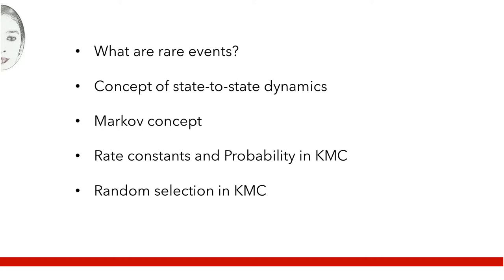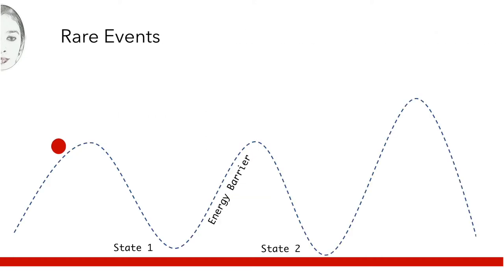A rare event is defined by crossing of an energy barrier by the system to transit from one state to another. Each state corresponds to a single energy basin where the system spends relatively long time.